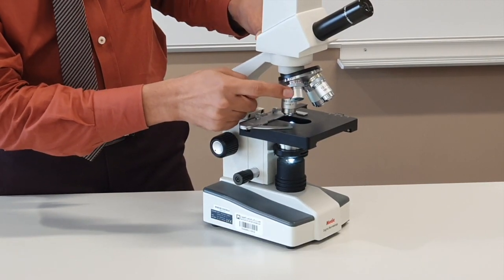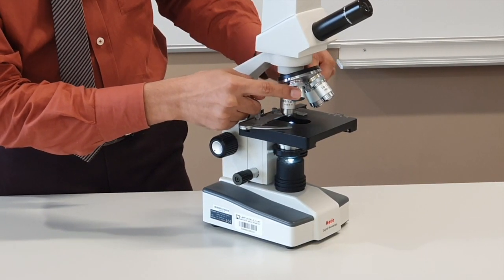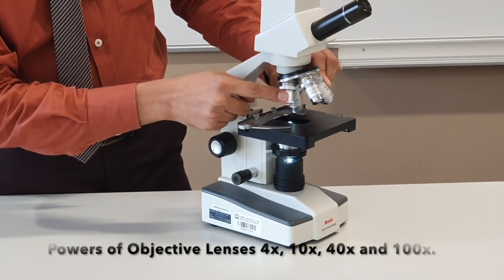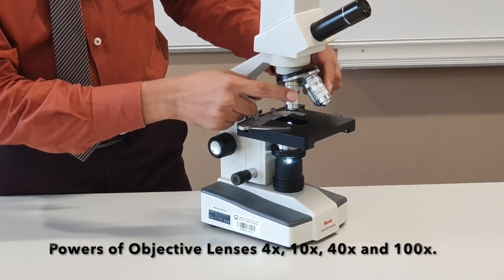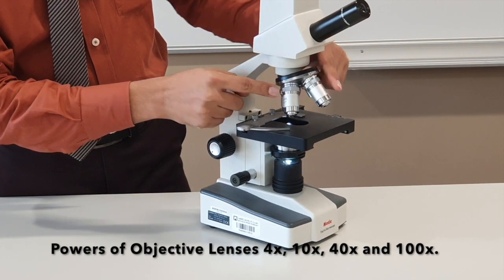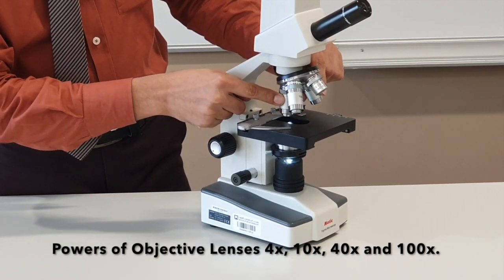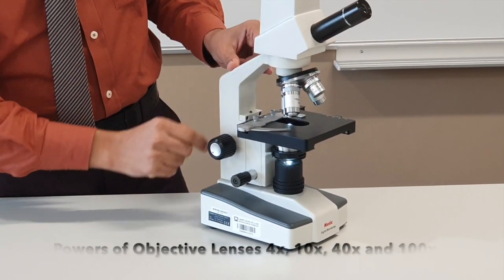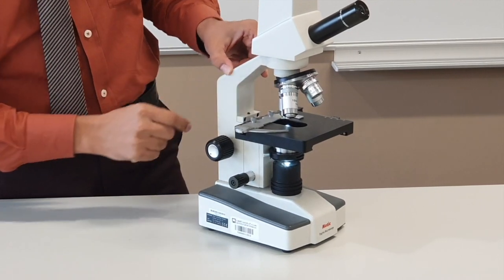If you see right now, this is 4x. If I keep rotating it, the next is 10x, the next one is 40x, and the last one is 100x. These are the different types of high and low power lenses which are used for magnification of the image.